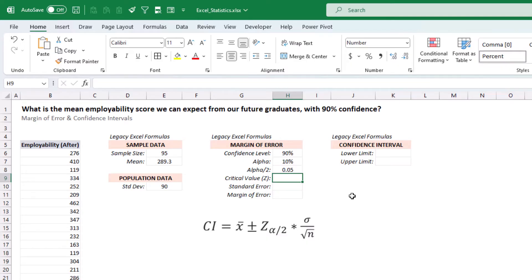Now, for the critical value, remember, we need the z-score at either alpha divided by 2. So let's do that first, norm.s.inv of alpha divided by 2. And that's going to get us the negative value.